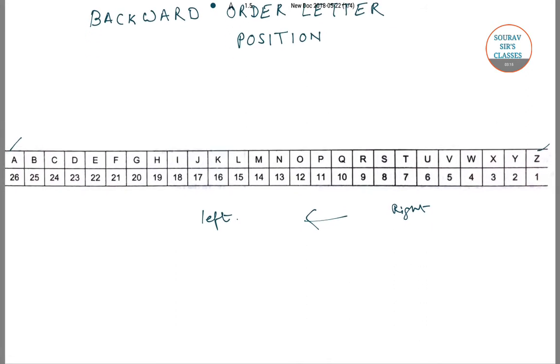Now suppose we remember the forward order letter position of an alphabet. Then its backward or reverse order letter position can be obtained by 27 minus its forward order letter position. For example, B's forward order letter position is 2, so its backward order letter position is 27 minus 2, which is 25.